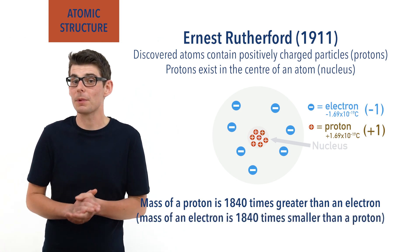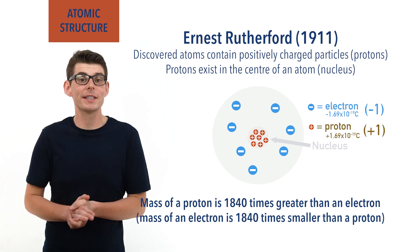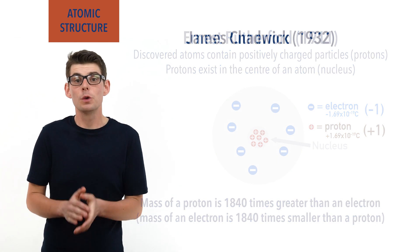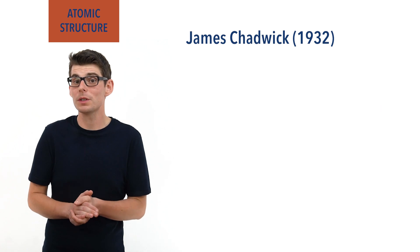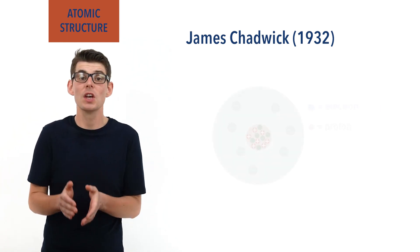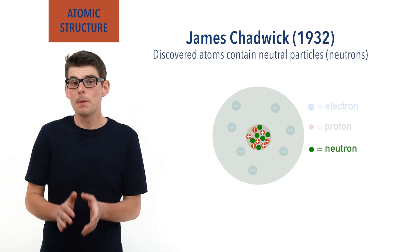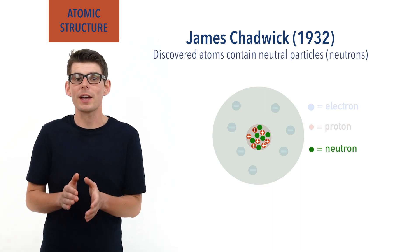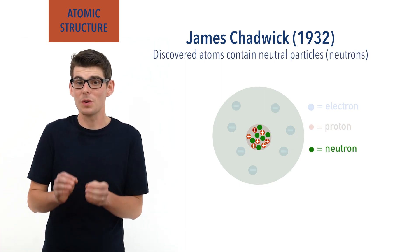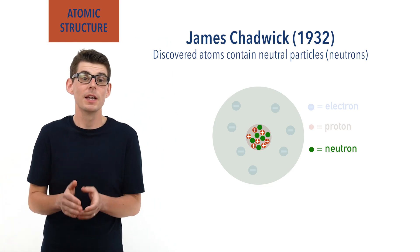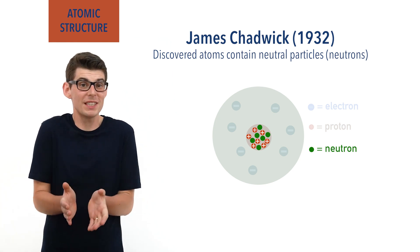All of this work was followed up a few years later by a scientist called James Chadwick, who discovered that atoms also contained particles in the nucleus with no charge that he called neutrons. Most important, however, was the fact that these neutrons had a mass that was very, very similar to the mass of a proton. Pretty much the same.